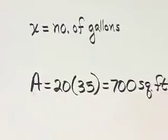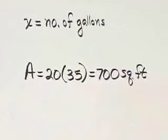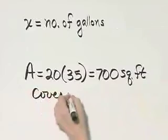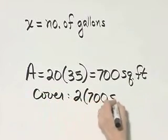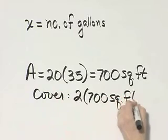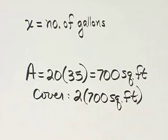But we want to cover it with two coats, so we want to cover an area of 2 times 700 square feet, or 1,400 square feet. How do we set up our equation?